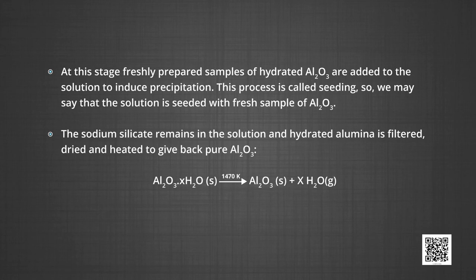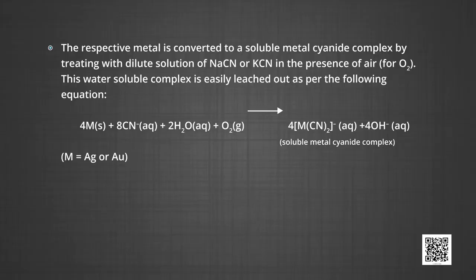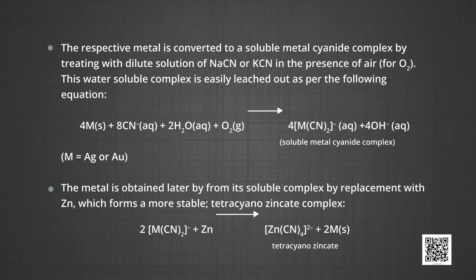In the fourth step, the sodium silicate remains in the solution and hydrated alumina is filtered, dried and heated to give back pure alumina, Al₂O₃. Now let us see the metallurgy of silver and gold by the process of leaching. The respective metal is converted to a soluble metal cyanide complex by treating with a dilute solution of sodium cyanide or potassium cyanide in the presence of air. This water-soluble complex is easily leached out. The metal is then obtained from its soluble complex by replacement with zinc, which forms a more stable tetra-cyano-zincate complex.